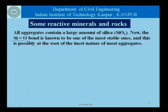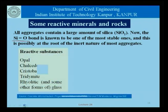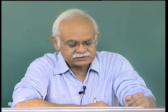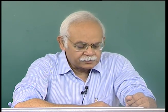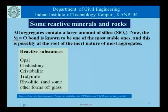The Si-O bond is known to be one of the most stable ones, and this is possibly at the root of the inert nature of most aggregates. However, certain forms of silica are reactive. It is not only silica; there are some other minerals also identified to be reactive. The reactive substances could be opal, chalcedony, cristobalite, tridymite, rhyolitic and other forms of glass like andesitic glass.